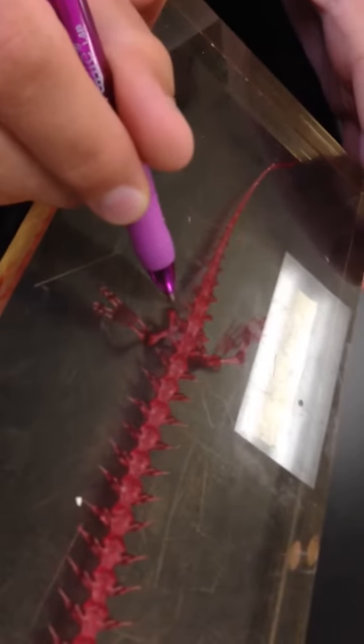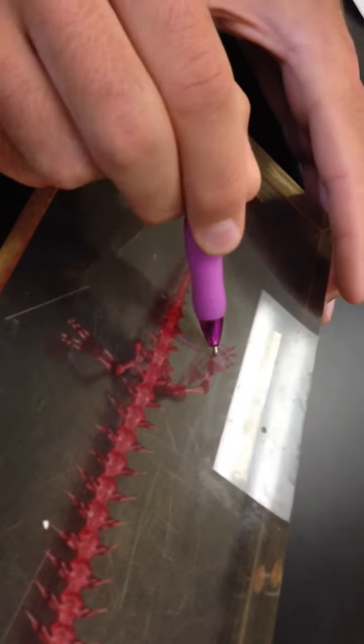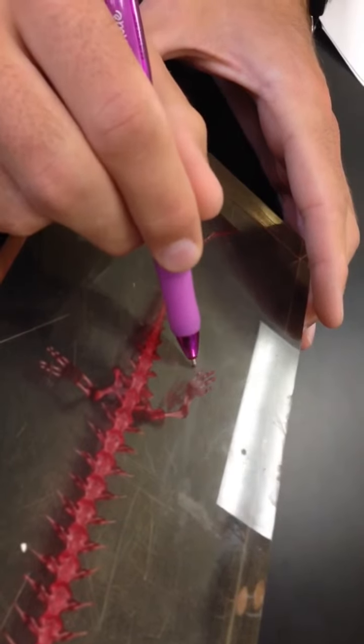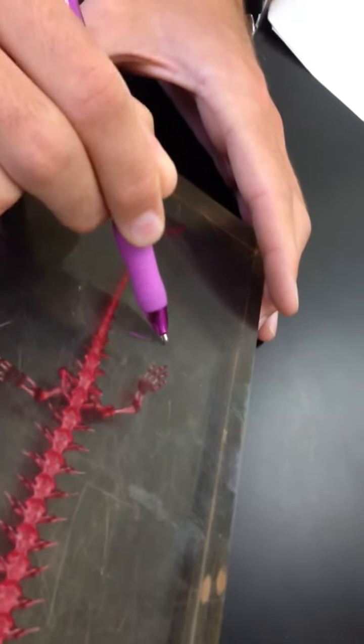In the hind limbs, we have the femur, and then to the inside is the tibia, to the outside is the fibula, and then tarsals, metatarsals, and phalanges.